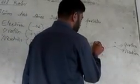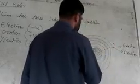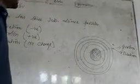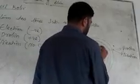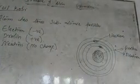Around this nucleus there are orbits, or we can say shells. In these shells there are another type of particles that are called electrons. These electrons have negative charge, protons have positive charge, and neutron has no charge.